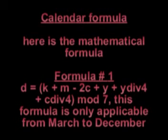Formula number 1. D equals K plus M minus 2 times C plus Y plus Y div 4 plus C div 4.